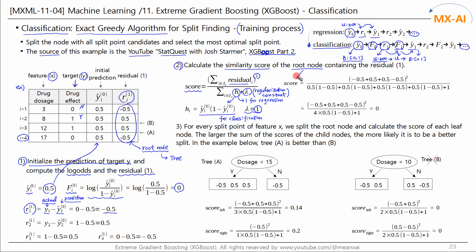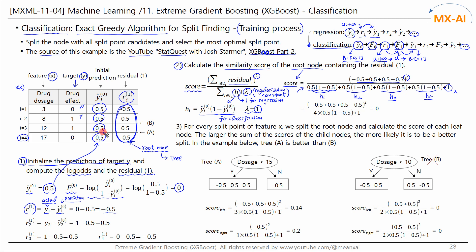Now let's calculate the score for the root node. The numerator is the square of the sum of the residuals. The denominator is calculated using the H values for each data point. Since the initial predicted value is 0.5 for all data points, all data points initially have the same H value. Adding lambda of 1, this calculation gives the root node a score of 0.